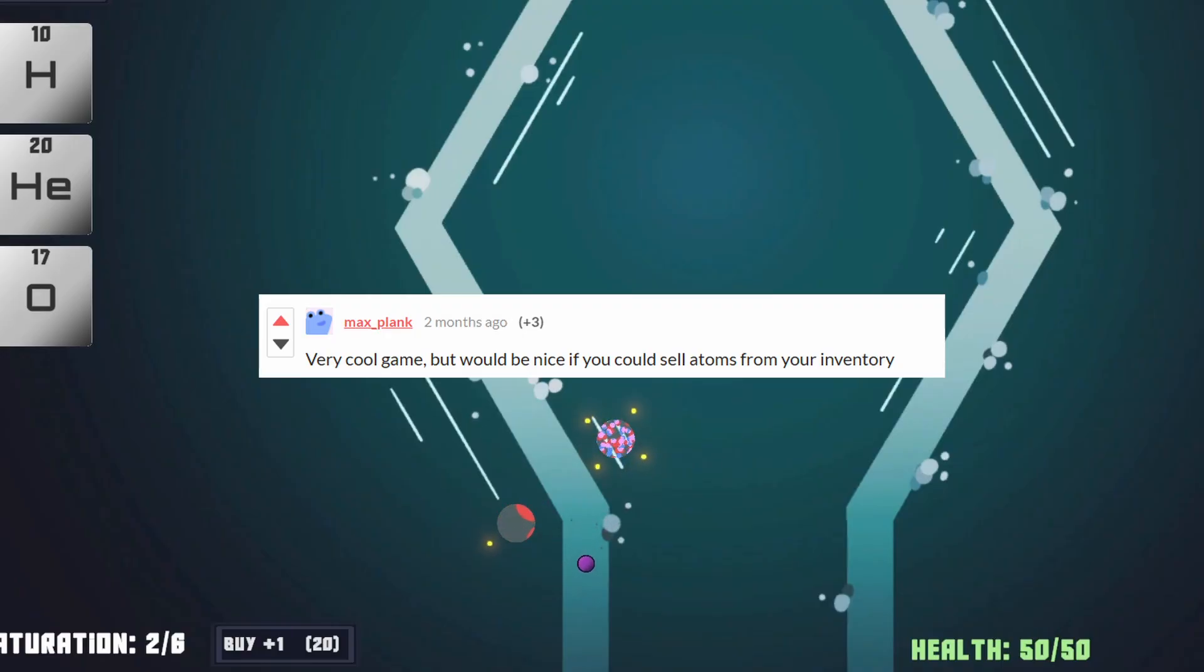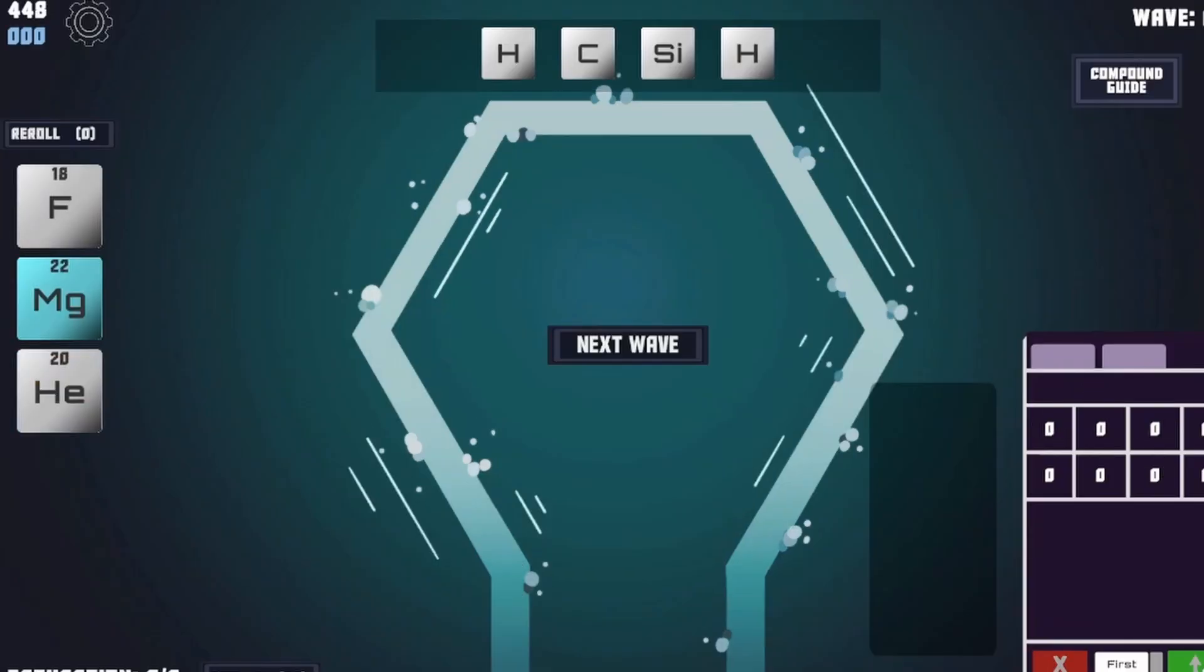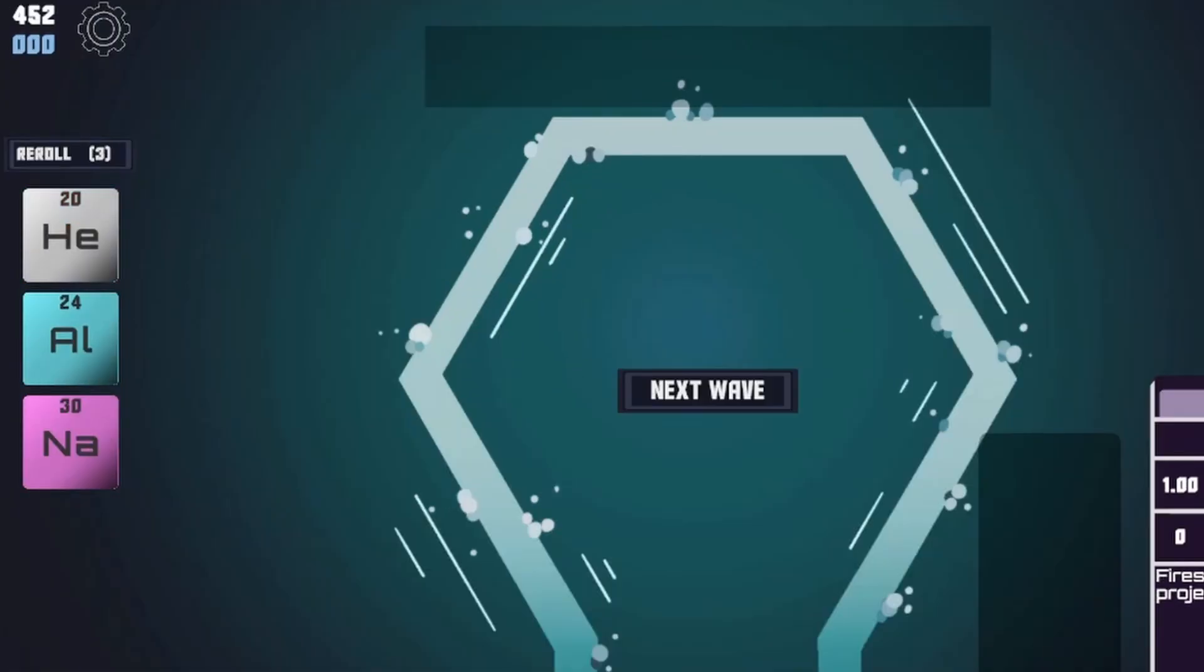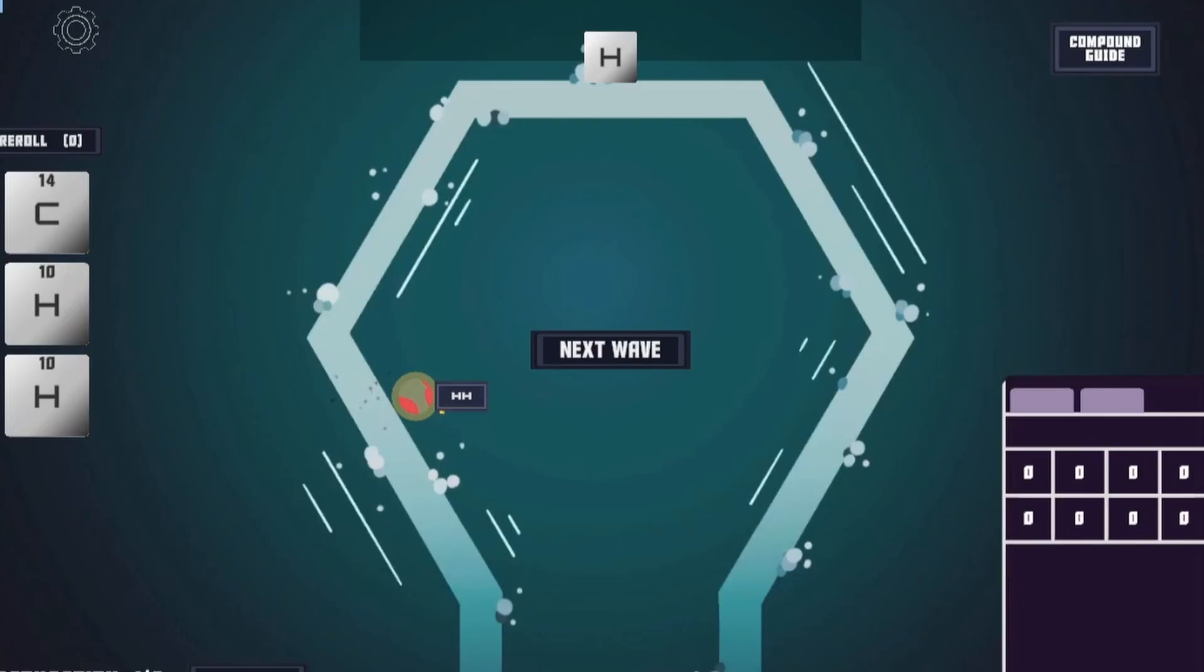A few people have pointed out some difficulties with selling atoms, so I added the option to sell atoms directly from your inventory with right-click. Additionally, when you right-click an atom in the shop, now it does an instant buy and sell, so you can pay half the price of an atom to reroll it.